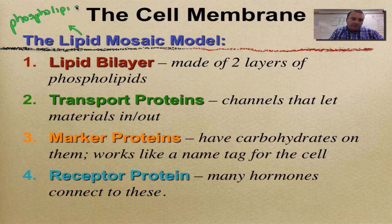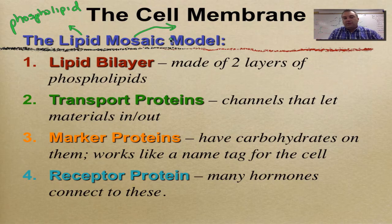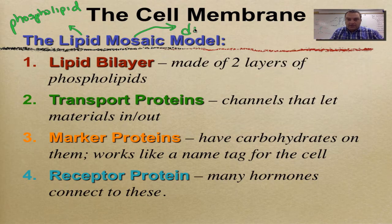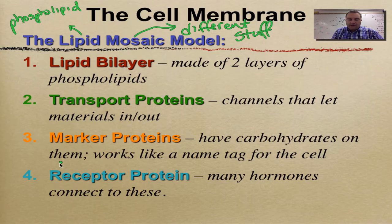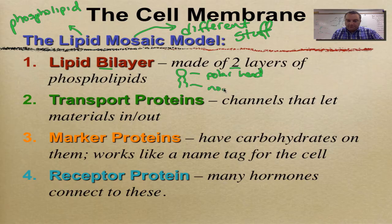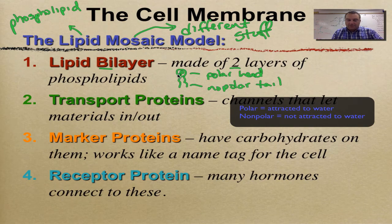We have a picture coming up where we're going to label the parts, so we won't worry about that right now. As for mosaic — if you think about Roman and Byzantine history, how they would make artworks out of different colored tiles arranged to make a picture — what that means here is it's just made out of different stuff. So it's a lipid bilayer, two layers — 'bi' means two. Phospholipids have a polar head and then they have non-polar tails. The phospho part is where the phosphate is.